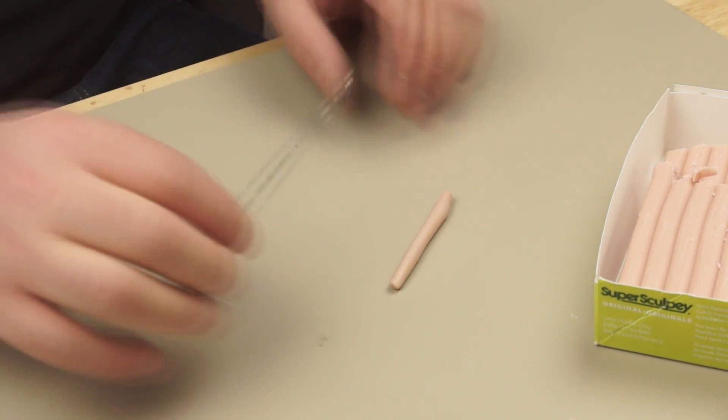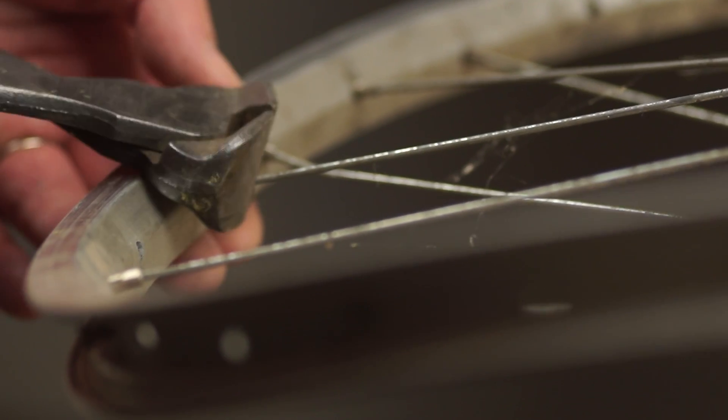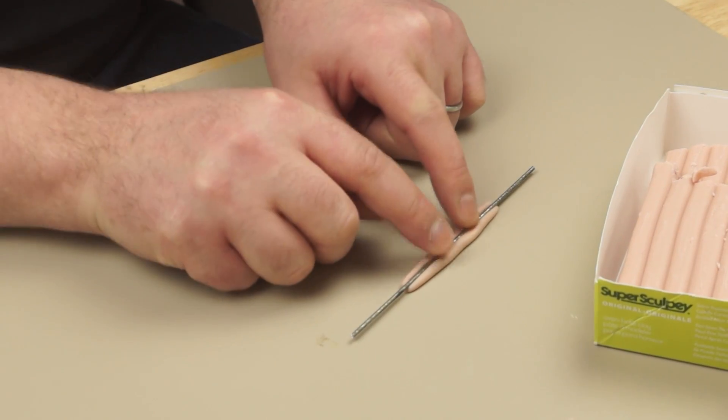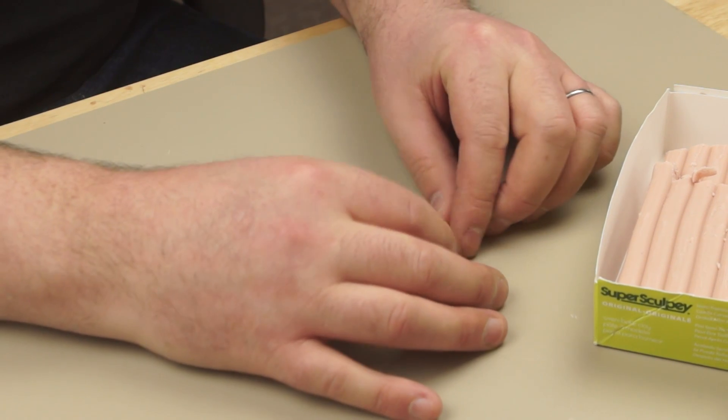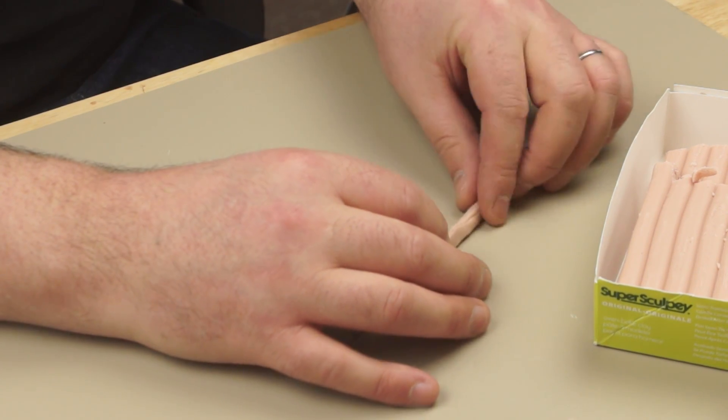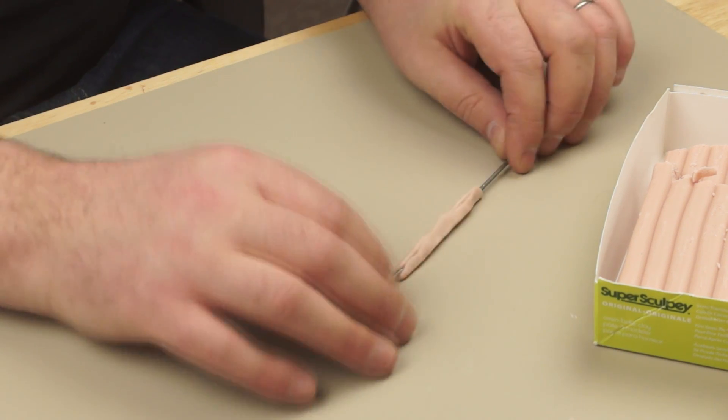To add some reinforcement I'm using a bicycle spoke and this I salvaged from a really badly buckled wheel. I'm just going to push that in kind of halfway and then close up behind it. Then roll again.